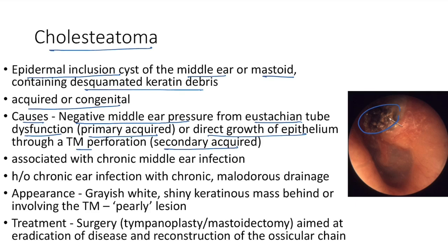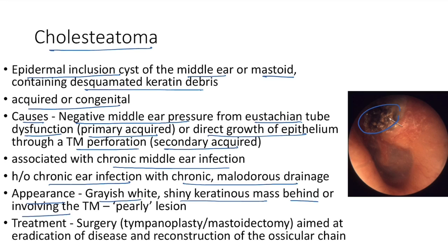Cholesteatoma is usually associated with chronic middle ear infection — there is a history of chronic ear infection with chronic malodorous discharge. It appears as a grayish-white shiny keratinous mass behind or involving the tympanic membrane, classically described as a pearly lesion. Treatment is surgery aimed at eradication of disease and reconstruction of the ossicular chain: tympanoplasty or mastoidectomy.